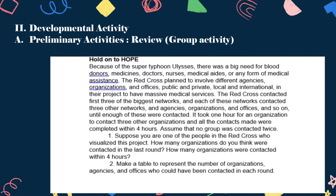Number one: Suppose you are one of the people in the Red Cross who visualized this project. How many organizations do you think were contacted in the last round? How many organizations were contacted within four hours? Number two: Make a table to represent the number of organizations, agencies, and offices who could have been contacted in each round. I will give you time to process and answer the questions. Pause this video and resume when you are done.